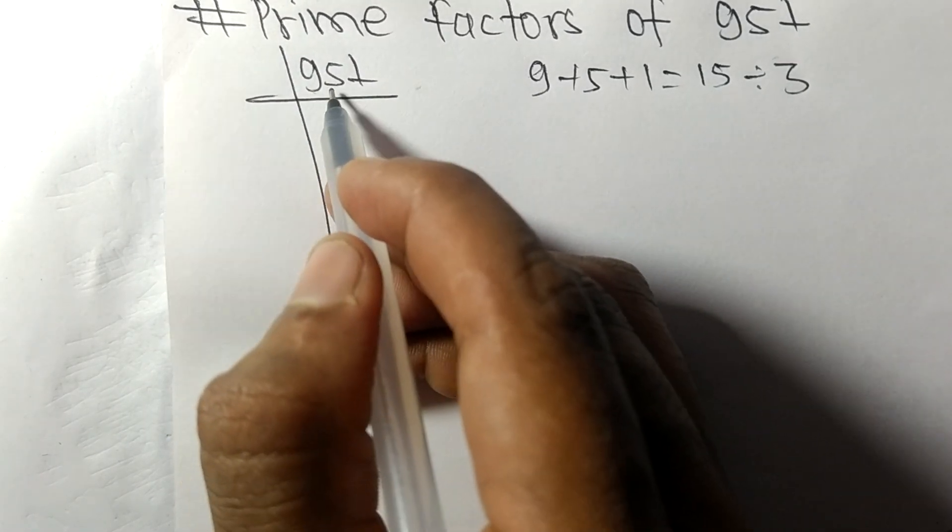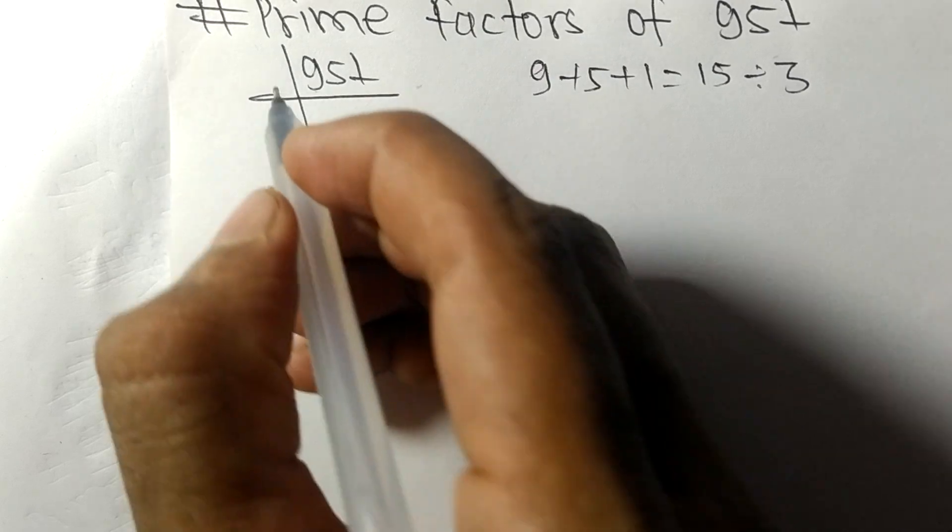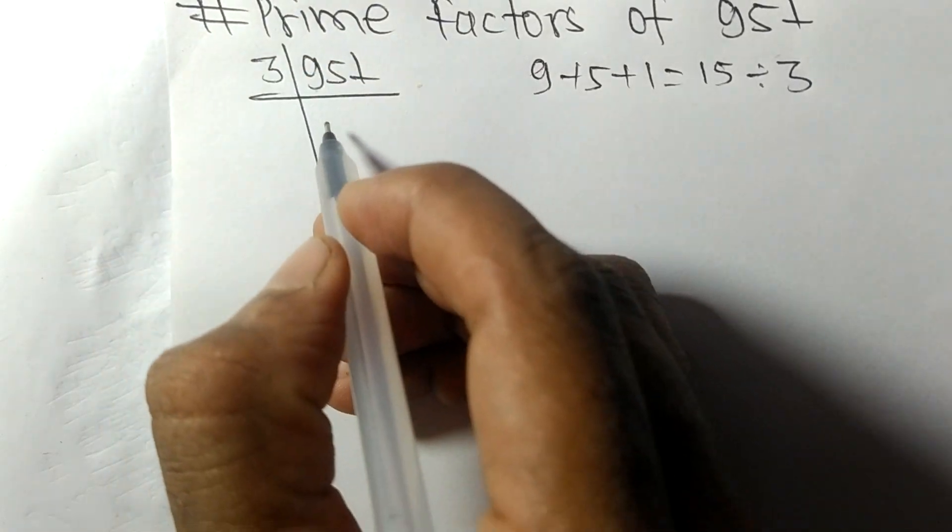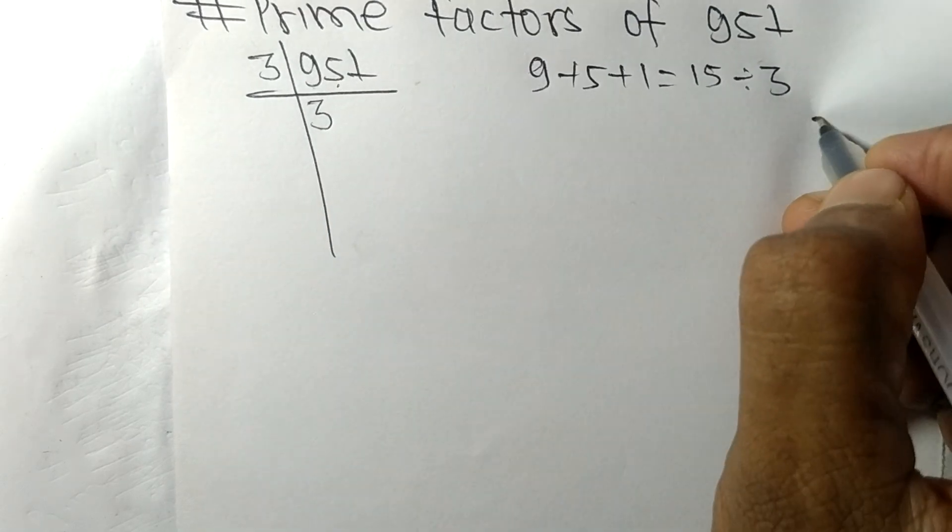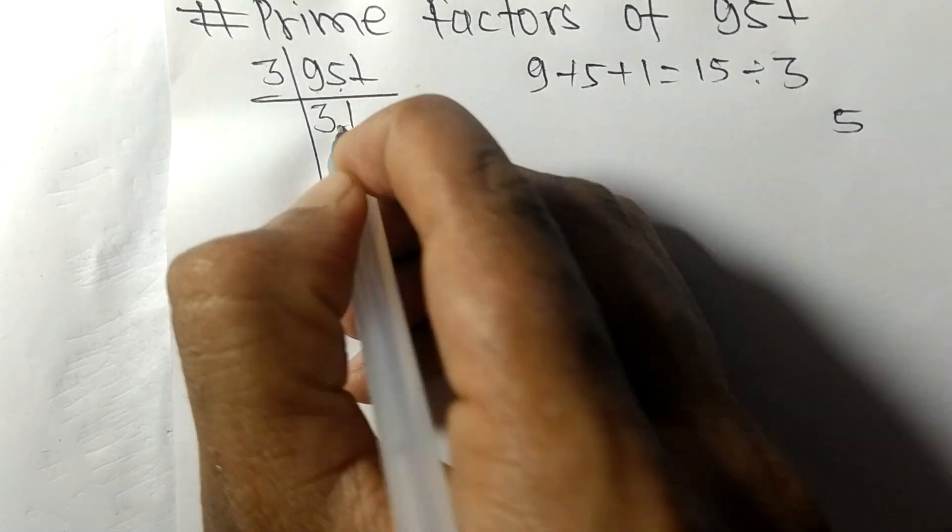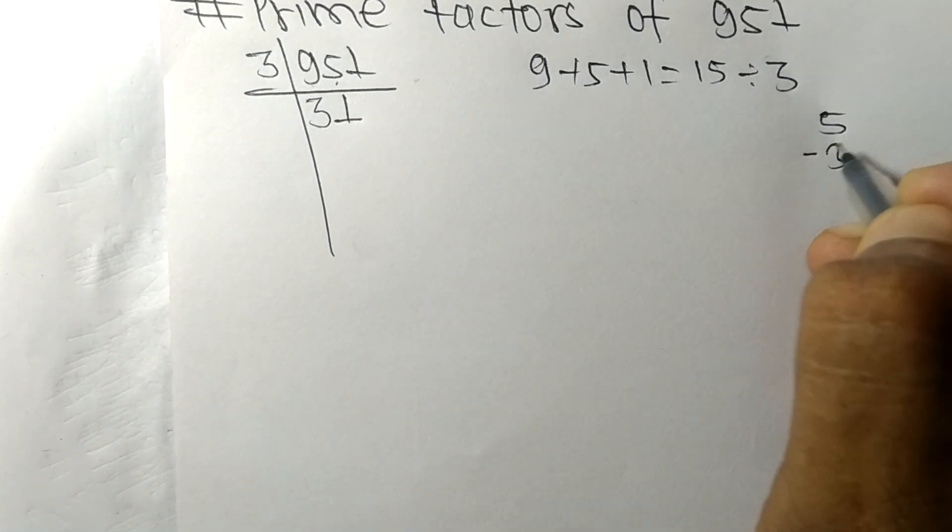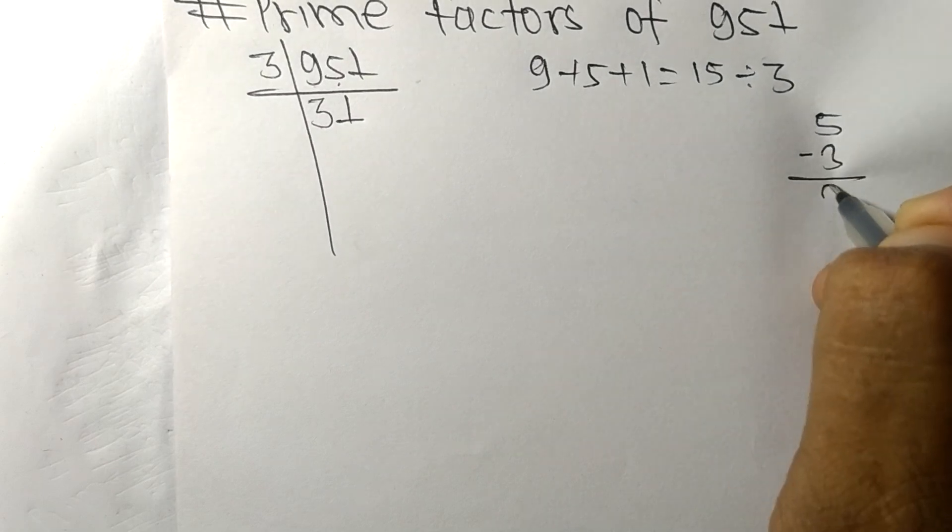So 951 is also divisible by 3. 3 times 3 means 9, now we have 5. 3 times 1 means 3, on subtracting we get 2.